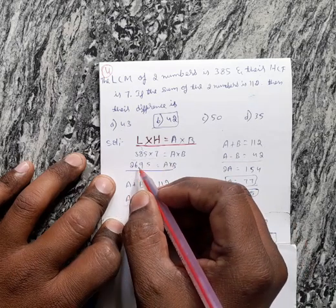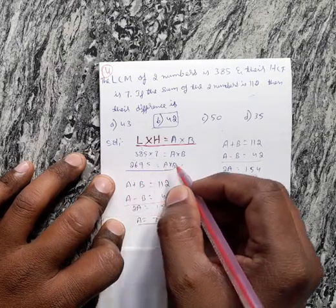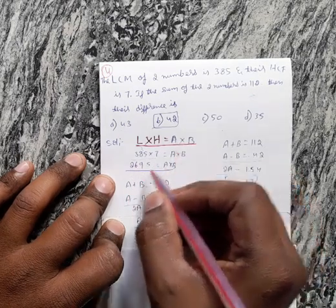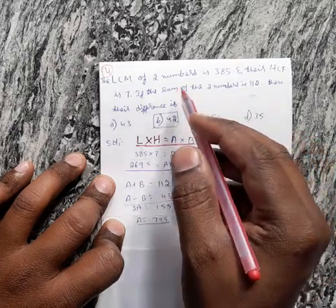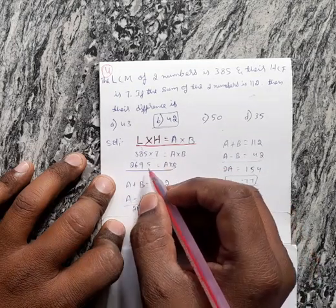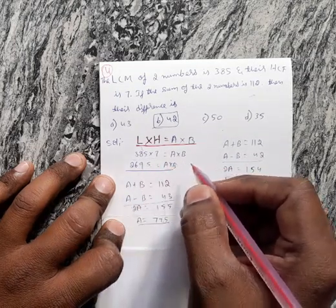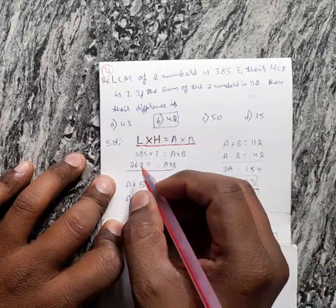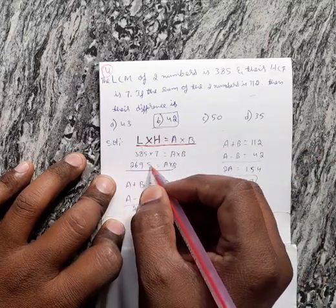It will become 2695, and the product of those two numbers is also 2695.